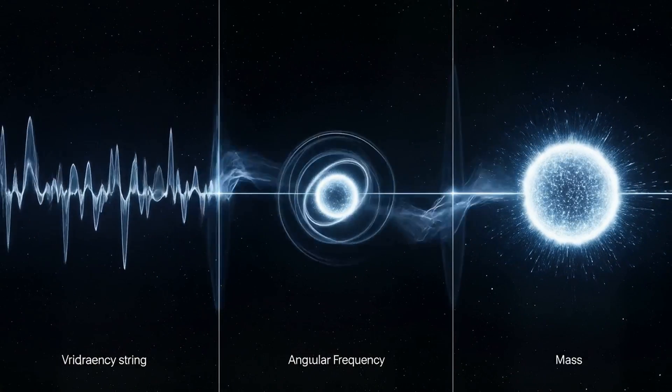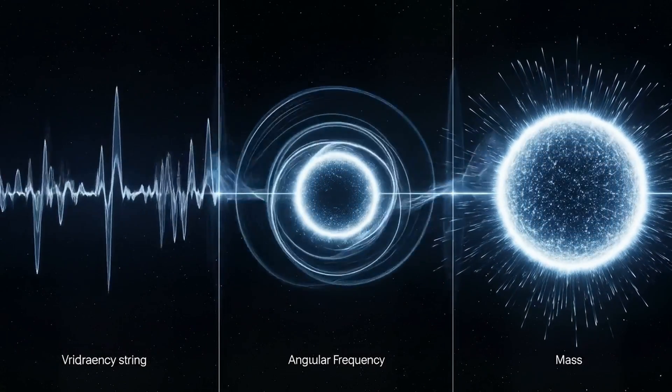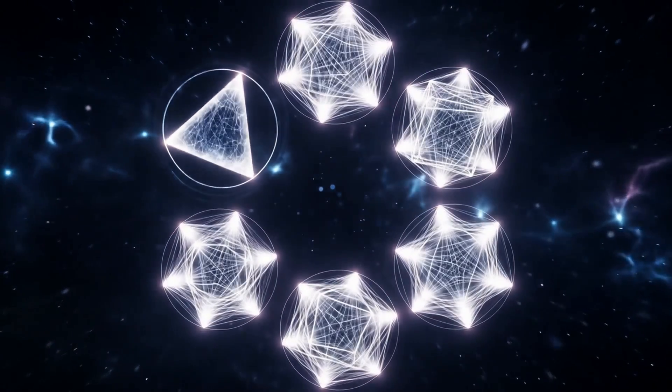Frequency is vibration, angular frequency is spin. Mass is the integrated projection across the horizon. That projection forms geometric resonance.